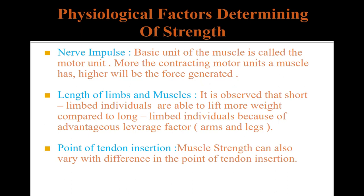Our next point is length of limb and muscle. It is observed that short-limbed individuals are able to lift more weight compared to long-limbed individuals because of advantages in leverage factors in arms and legs. Additionally, people with longer muscles have greater potential for developing strength than people with relatively short muscles.